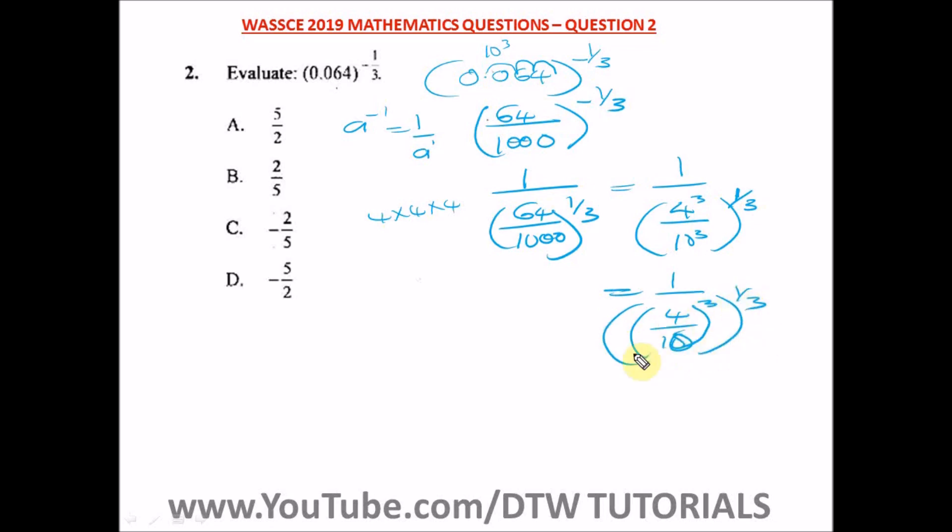So from here, to open up this bigger bracket, this 3, we are going to, this 1 over 3, we multiply this 3, where it will cancel out. When this multiplies, these 3 cancel out. So what are we left with? We are left with 1 number 4 over 10.